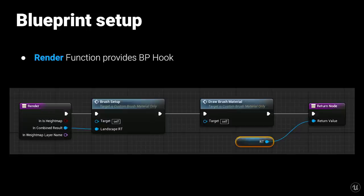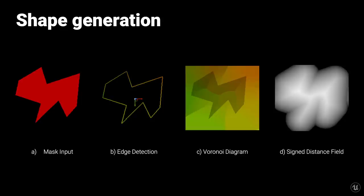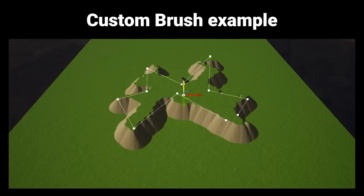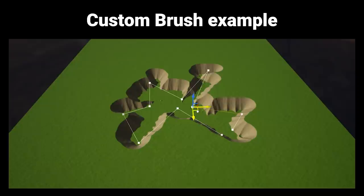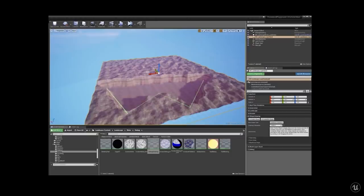The data flow from landscape to custom brushes: landscape initiates a render function on a custom brush with current terrain data as input, the brush performs GPU material renders using this data resulting in render targets as output, and those render targets are passed back to the landscape. Inside a custom brush, the current terrain data is modified using a material and written to a render target, which is returned back to the landscape on the return node. The Landmass plugin generates terrain formations from simple shapes: first generating a mask from a spline, running an edge detection pass, then the jump flood algorithm to generate a Voronoi diagram, which is converted into a signed distance field.